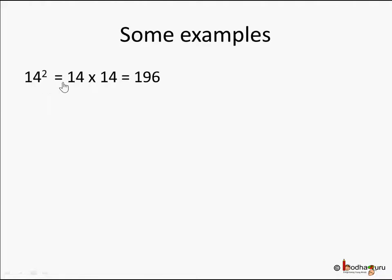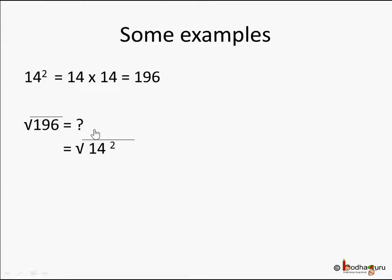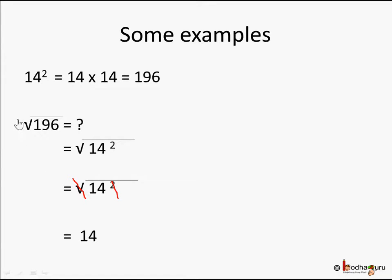Let's take some examples. 14 squared is nothing but 14 into 14, which is equal to 196. So this is the square operation: 14 squared means 14 into 14, which equals 196. And vice versa, square root of 196 is equal to square root of 14 squared. You can cancel the square root and the square operation because they are reverse operations of each other. So what you are left with is 14 — so square root of 196 is 14.